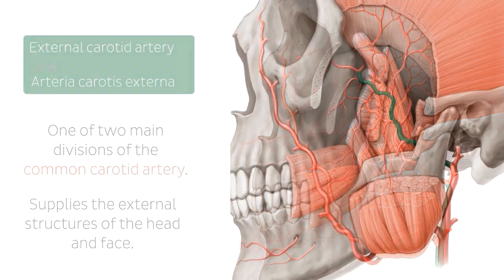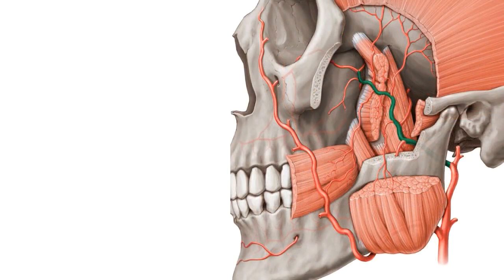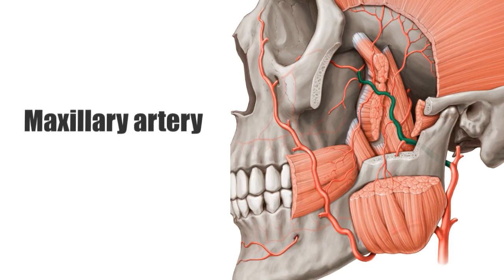Now let's highlight the main structure we're focusing on in this tutorial. The maxillary artery is one of the terminal branches of the external carotid artery, and its branches supply the deep structures of the face.